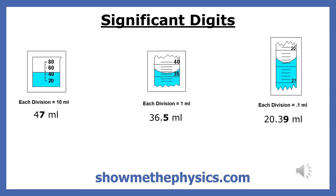Look at the three measuring devices shown here. If you were measuring volume with these three devices, which one do you think would give you the most accurate measurement? If you said the third one, you would be correct — the smallest division is 0.1 milliliter. When we report a number in physics, we always show the accuracy of our measuring device by including all the numbers we know for certain and the one digit we had to estimate.